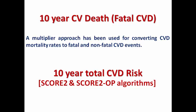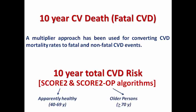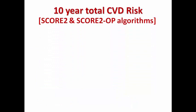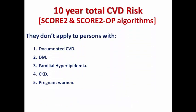The 10-year total cardiovascular risk has a new score called SCORE2 and SCORE2-OP. SCORE is an acronym for Systematic Coronary Risk Estimation, and the number two reflects that this is a new version compared to the 2016 guidelines. SCORE2 is used for apparently healthy individuals between 40 and 69 years old, while SCORE2-OP (Older Persons) is for those aged 70 or older. Remember that the 10-year total cardiovascular risk does not apply to patients with documented cardiovascular disease, diabetes, or familial hyperlipidemia.